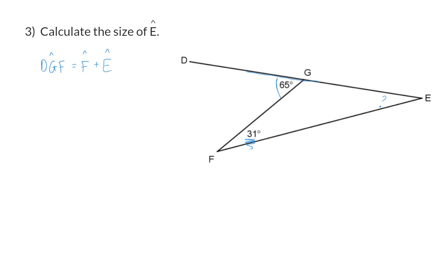And again, I need to supply a reason which will be the exterior angle of a triangle. We were given that the exterior angle is 65 degrees and F 31. So now I can solve angle E. To do this I'm going to take the 65 and subtract 31 from it which means that angle E will have a size of 34 degrees.